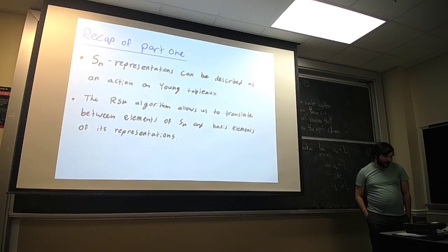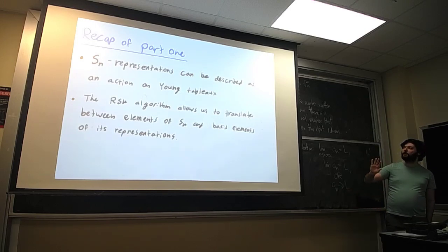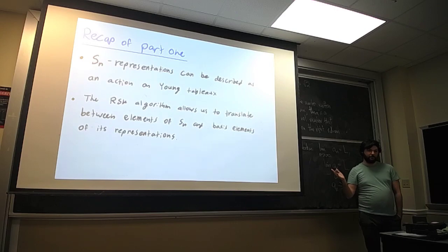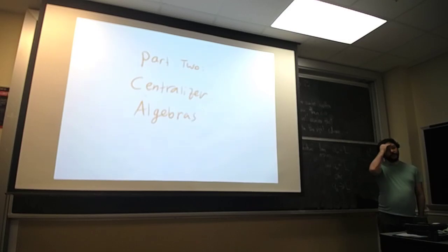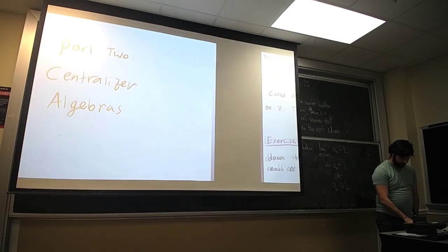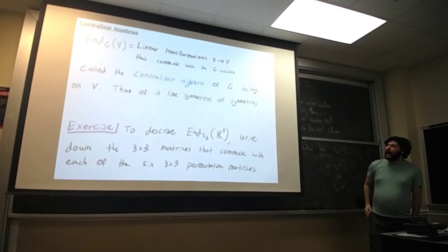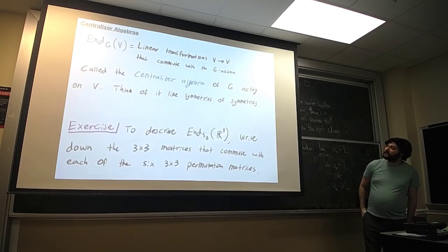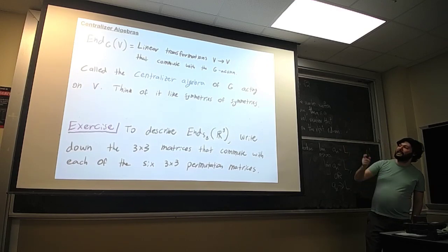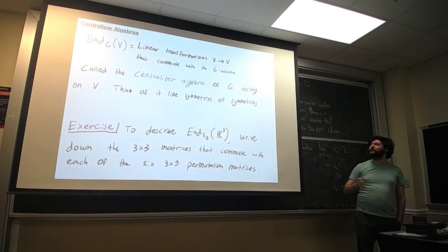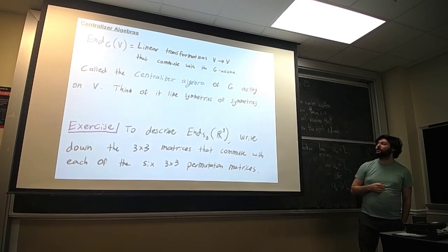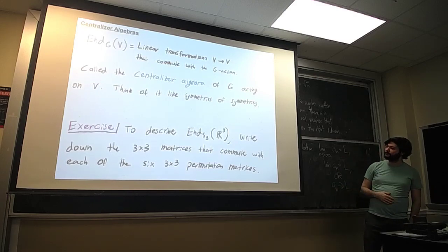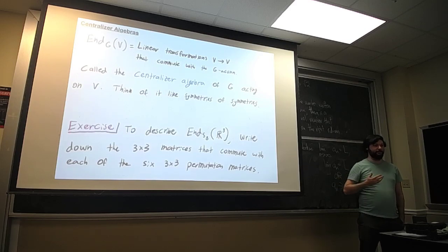Moving on to the next part — these are the objects I like to study: representations of the symmetric group. The tool I like to use to study them is centralizer algebras. The core idea is that we have a vector space V with an action of a group G, and we ask for End_G(V): all linear transformations from V back to itself that commute with the G action. This is called the centralizer algebra of G acting on V — I like to think of it as the symmetries of some symmetries.